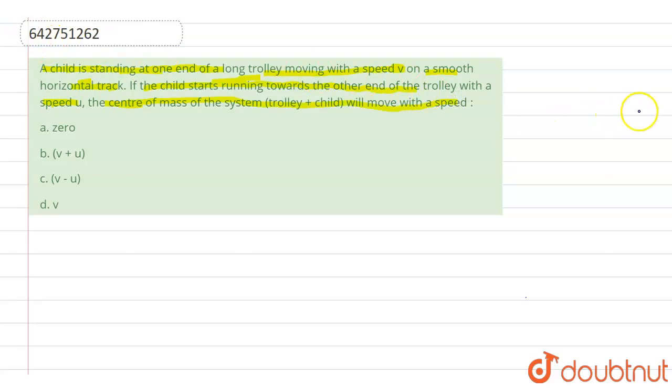Now what is happening? Initially, the trolley is moving with velocity v. Since there is no external force, we can say that the center of mass of system will move with v.